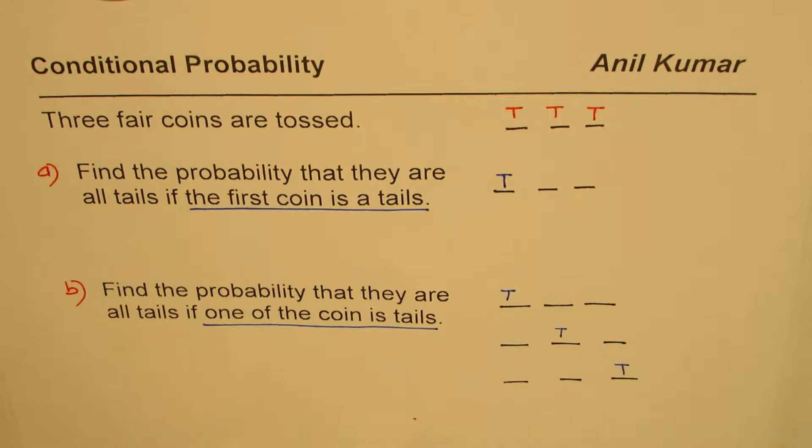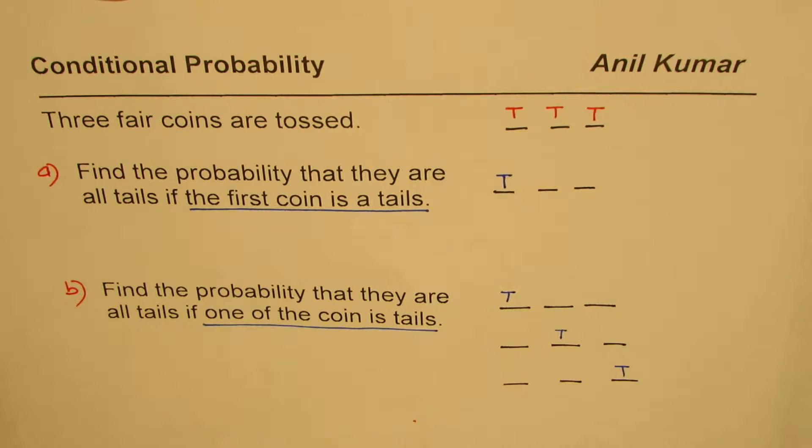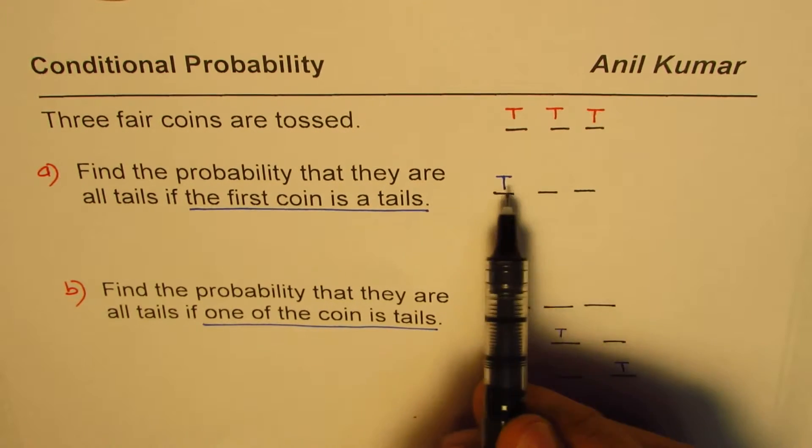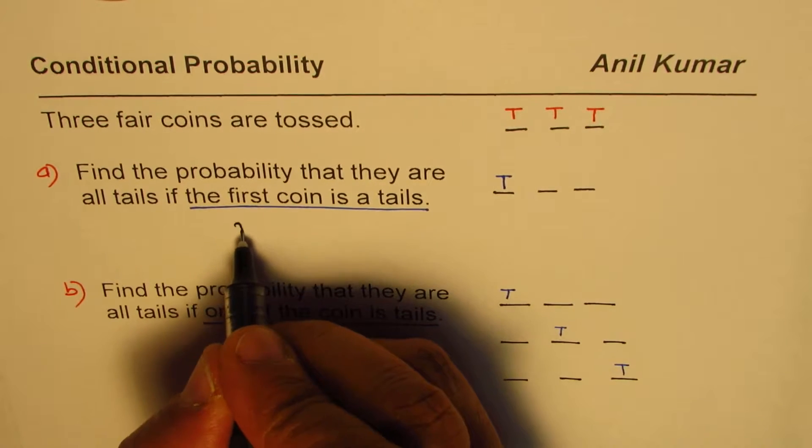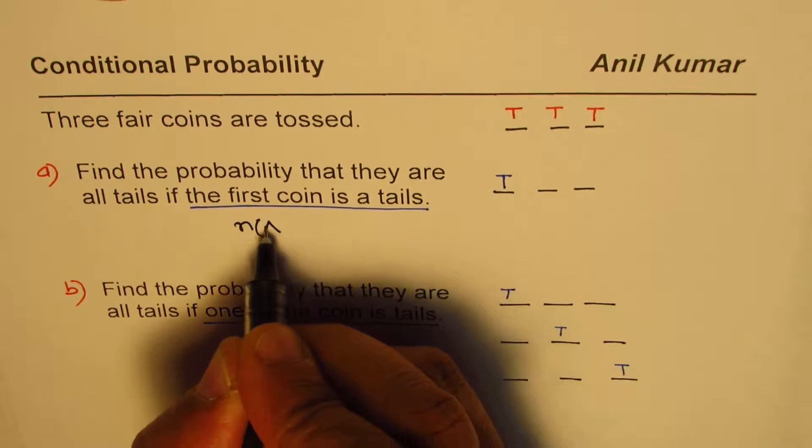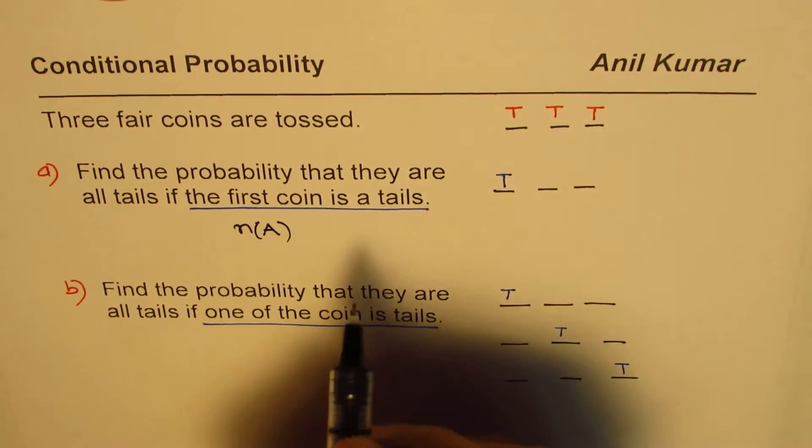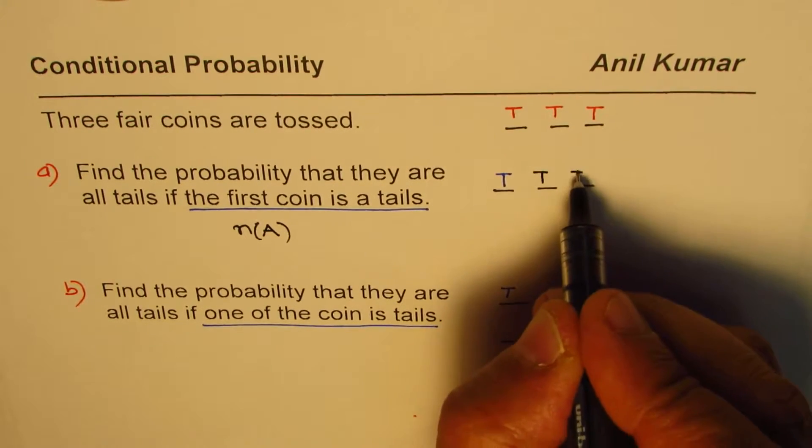That is how these two options are slightly different. You can now pause the video, answer the question, and then look into my suggestion. Now the favorable chances are only one that all are tails. So what we have here is that if the event A is getting three tails, in that case there is only one way we can get it.